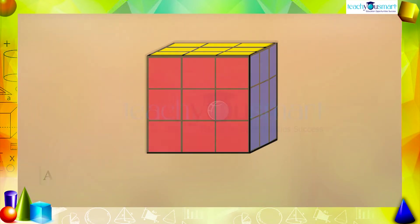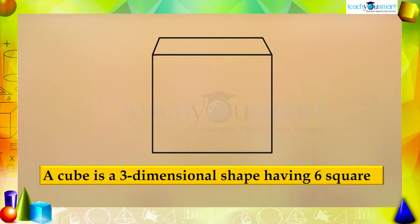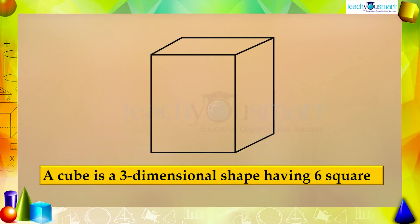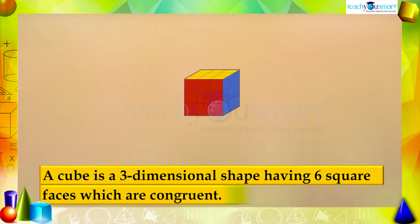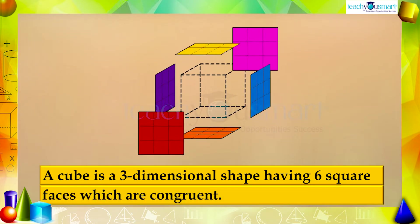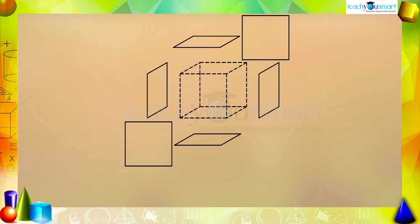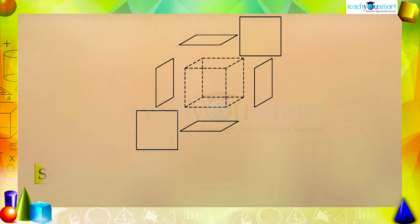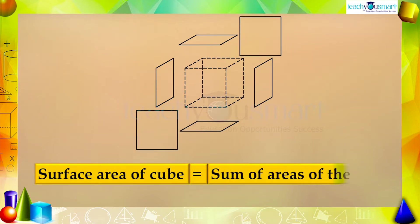We know that a cube is a three-dimensional shape having six square faces which are congruent. So the surface area of a cube is the sum of the areas of these six congruent faces.